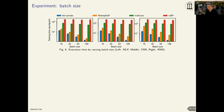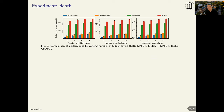Here we compare per-epoch processing time on varying batch sizes. As we increase the mini-batch size, the per-epoch processing time decreases. This is due to the fact that our proposed method can utilize GPU parallelism. We also present results on different network depths: as expected, as the depth increases the processing time increases, but the rate of increase for our method is similar to that of the non-private method.